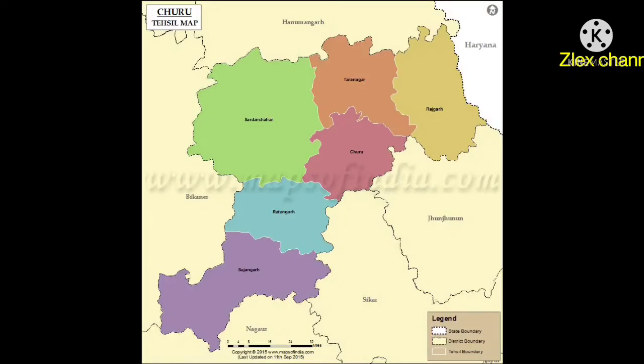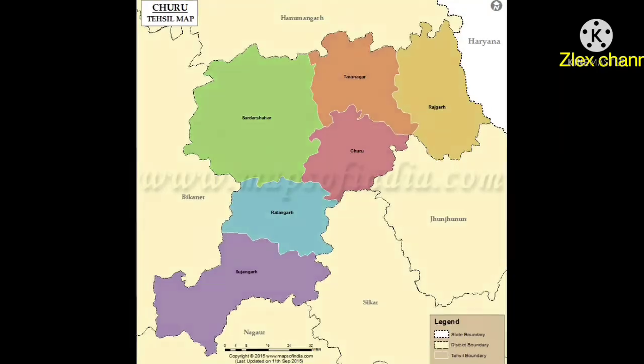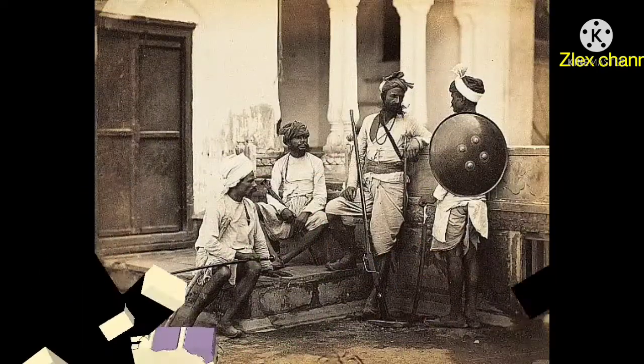Presently, there are eight tahsils including Sidhmukh, Sadulpur, Ratangarh, Sujangarh, Sardar Shahar, Taranagar, and Bidasar.